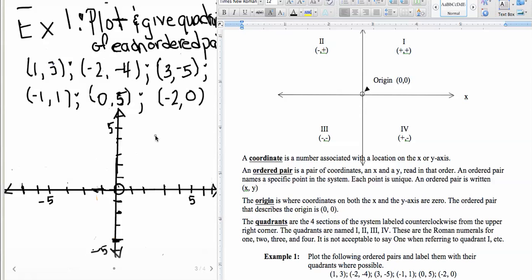So we start with quadrant 1 here, and then we go over here to quadrant 2, and then we go down here to quadrant 3, and then we go over here to quadrant 4. And those are labeled, as you see here in the notes, with the Roman numerals. All right, so we're going to plot these points.